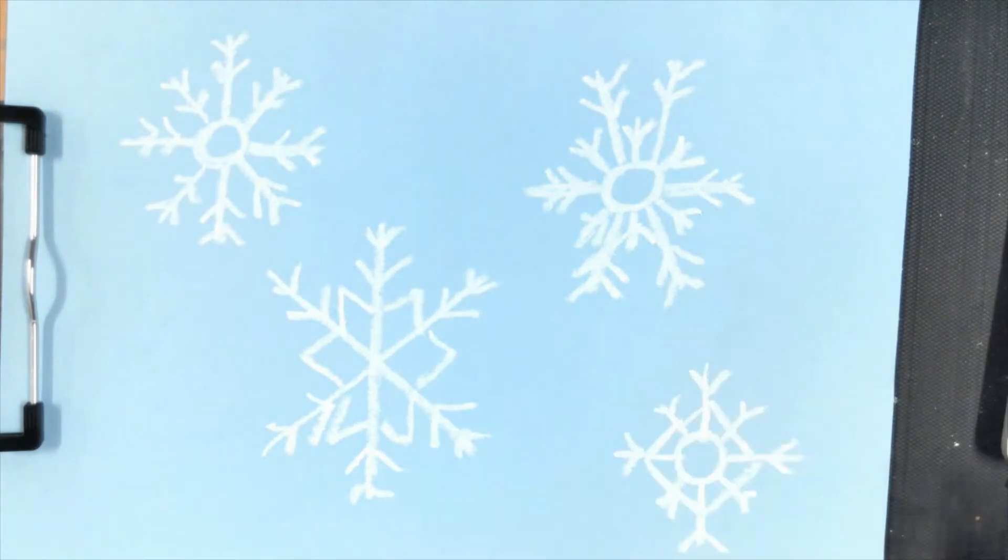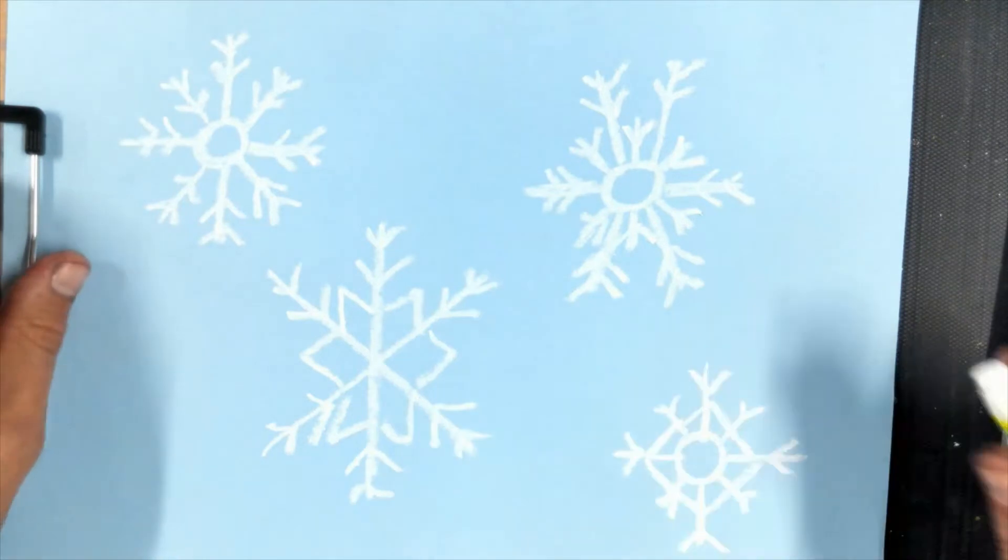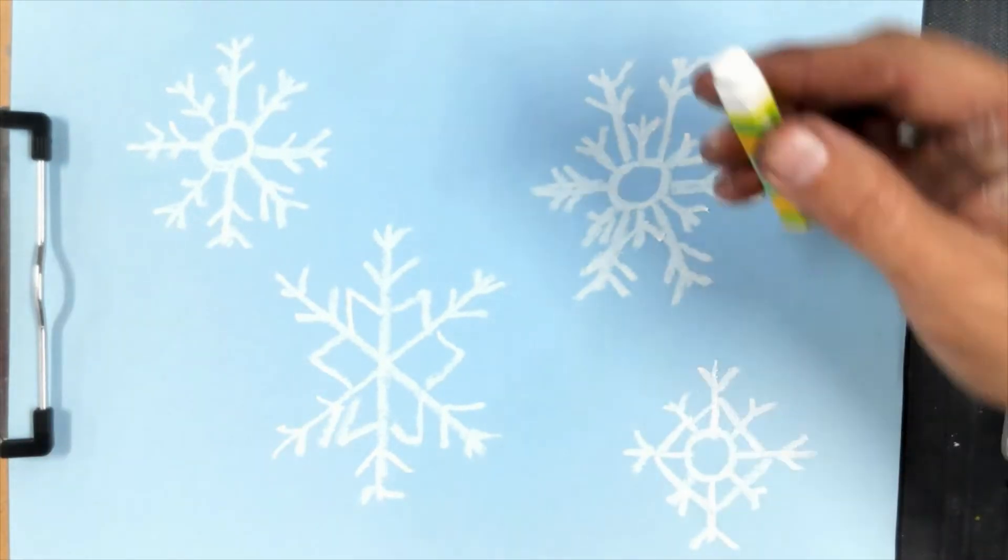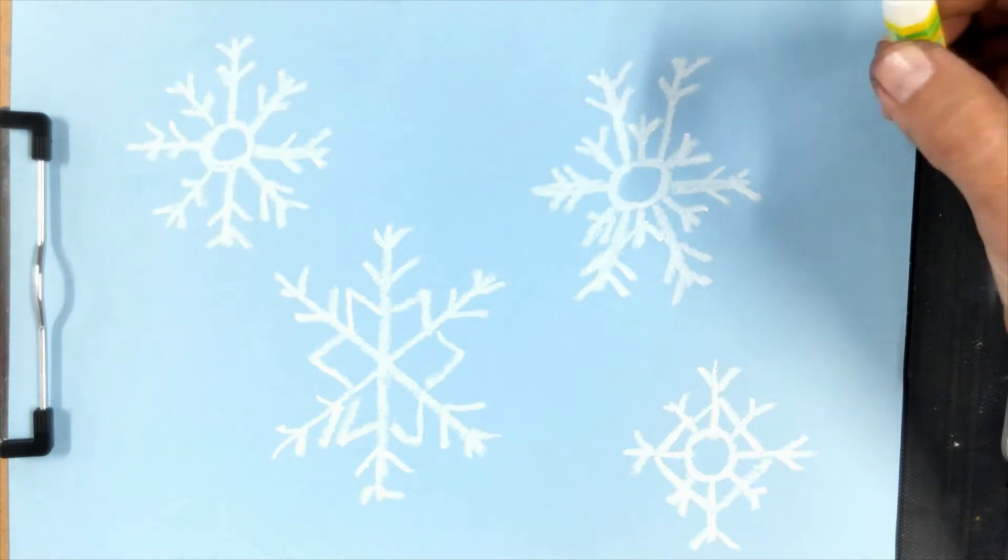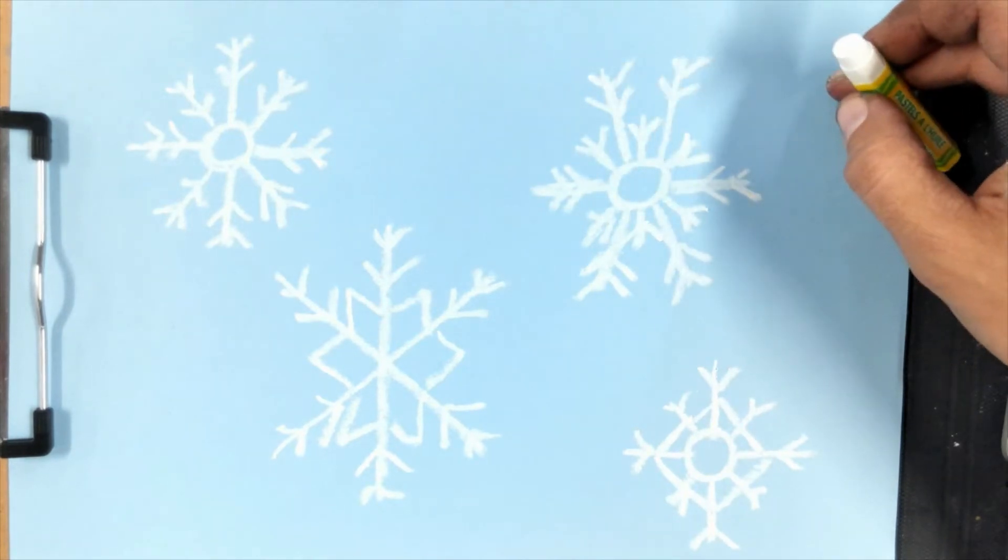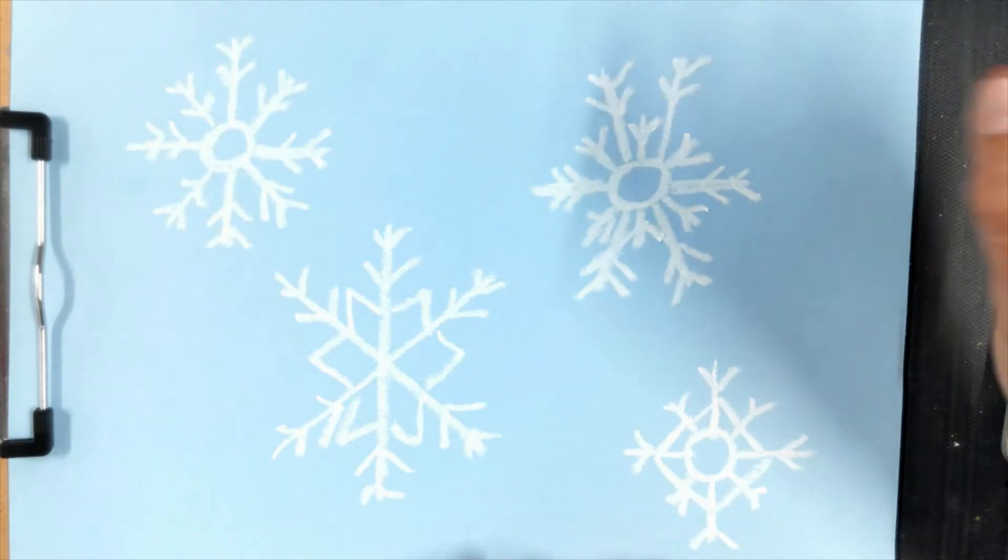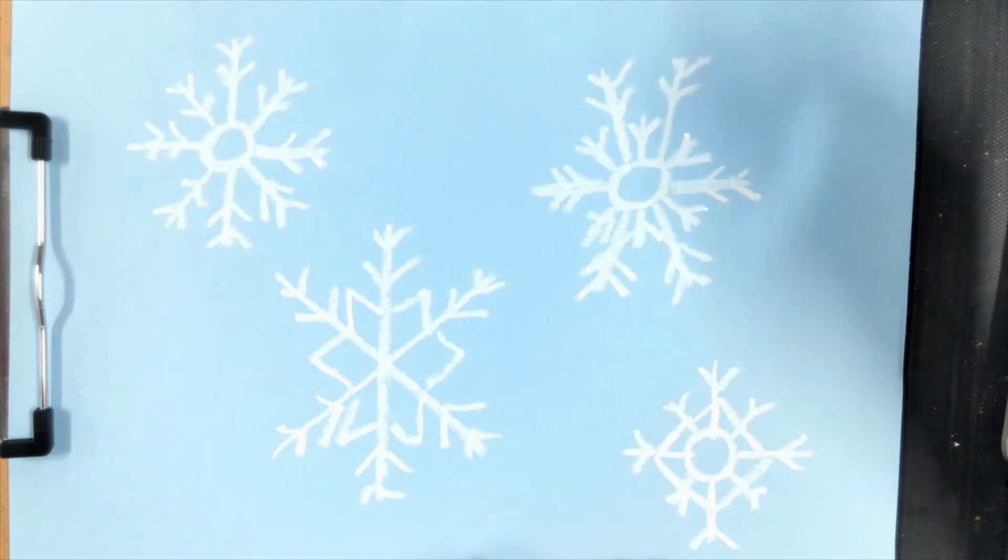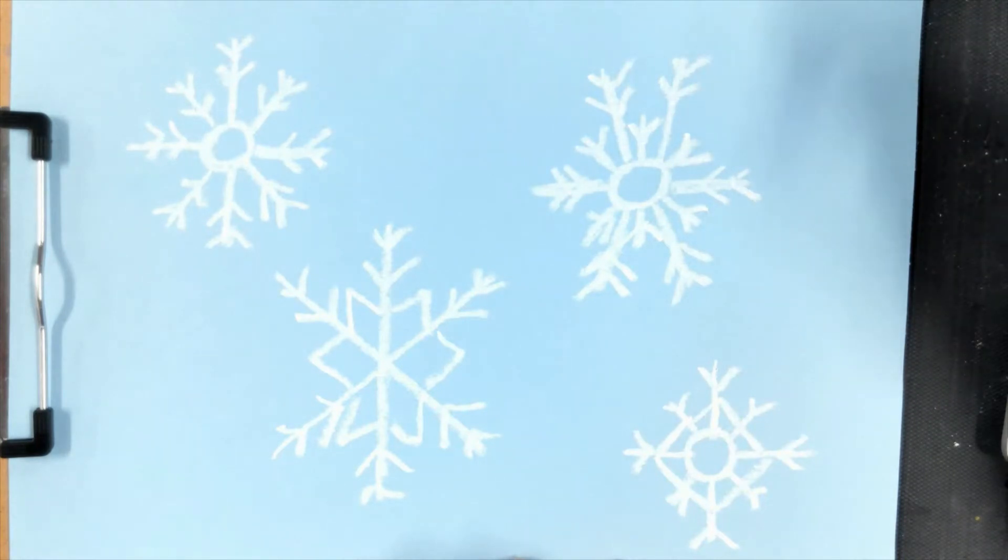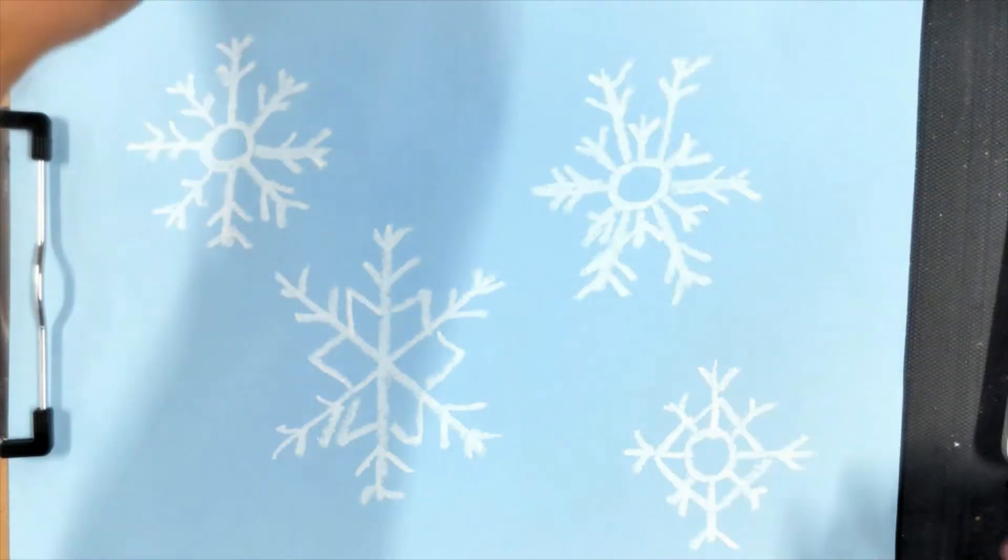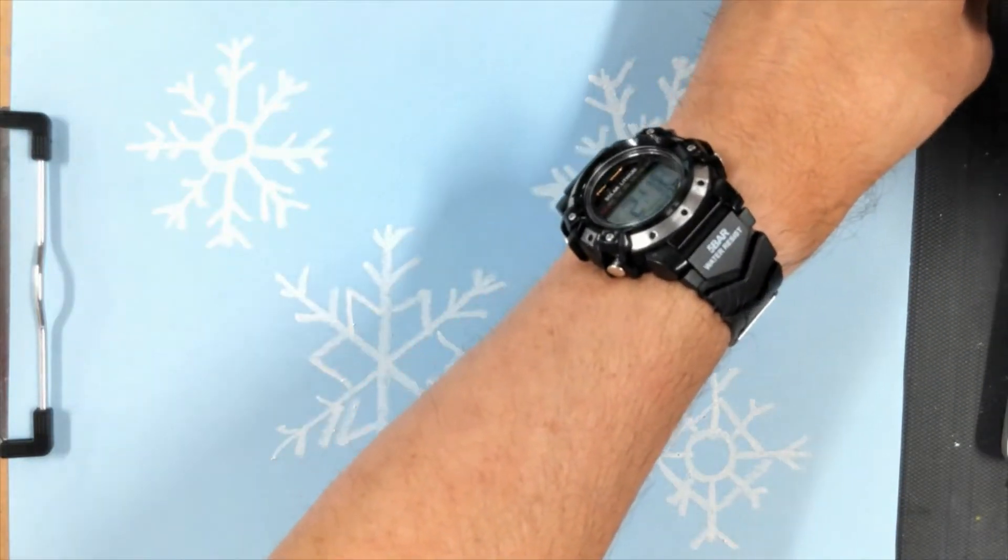Alright, so once you have your paper pretty full of snowflakes, we're going to start painting. By the way, I'm using an oil pastel. This works really good and it's also nice if you have a colored piece of paper because otherwise, if you have a white piece of paper, it's really hard to see where you are drawing. If you don't have an oil pastel, a white crayon will work okay. The oil pastel works better, but the white crayon works okay. Alright, now we're going to start painting.